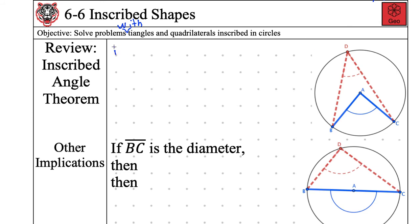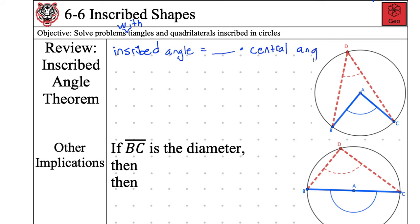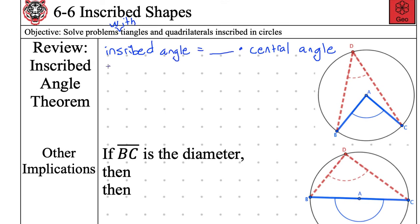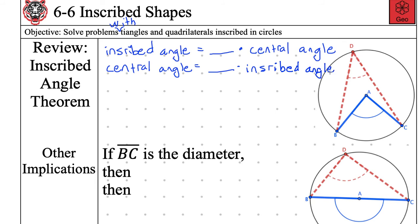So if I have an inscribed angle, that's equal to what times my central angle? The inscribed angle equals one half times the central angle. And the second formula — as Andres is asking with his quiet raised hand — the central angle is equal to two times the inscribed angle. Yes, Andres, central angle equals two times the inscribed angle — you have it correct.